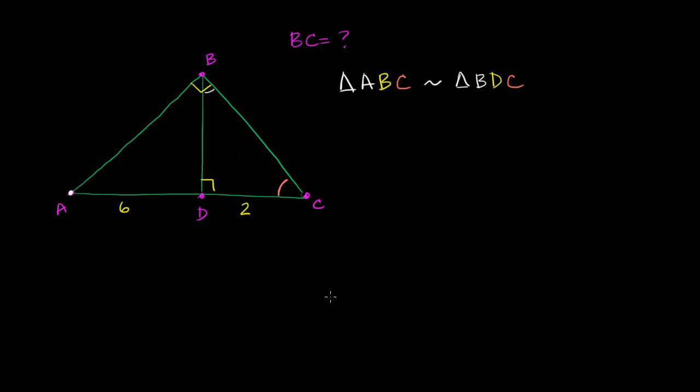And now that we know that they are similar, we can attempt to take ratios between the sides. And so let's think about it. We know what the length of AC is. AC is going to be equal to 8, 6 plus 2. So we know that AC, what's the corresponding side on this triangle right over here?